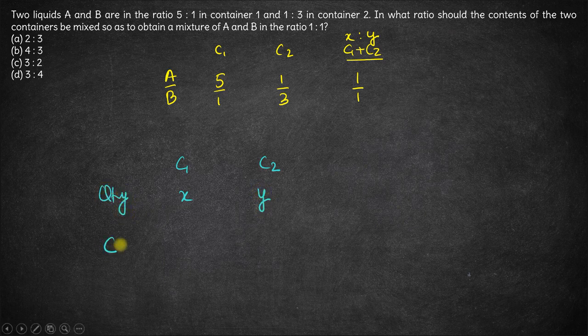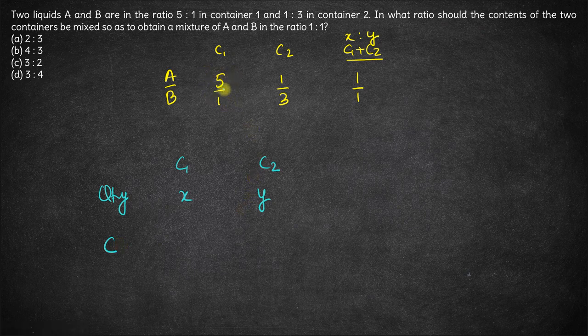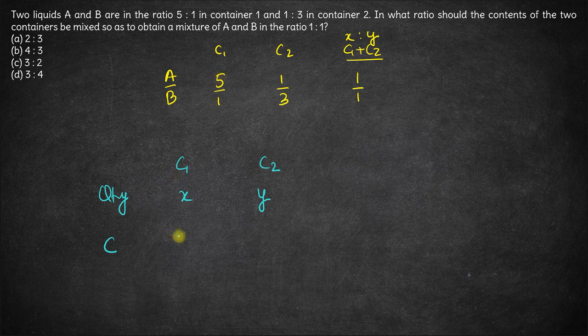Now, either you can solve with respect to A or with respect to B, you can choose any one of them. Let's solve with respect to A. The fraction of A in container 1 is 5 sixth and fraction of A in container 2 is 1 fourth.